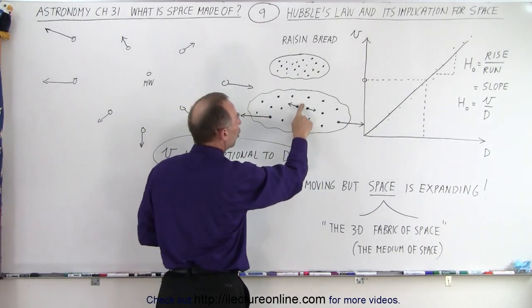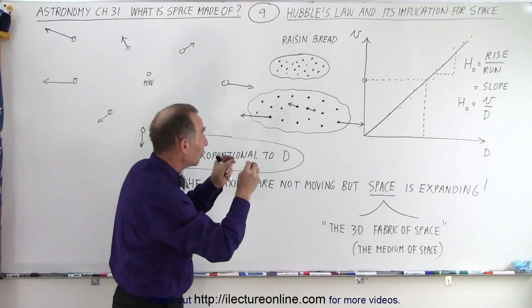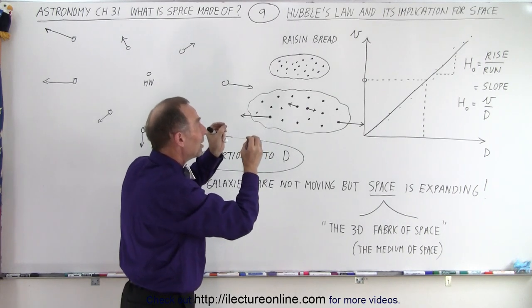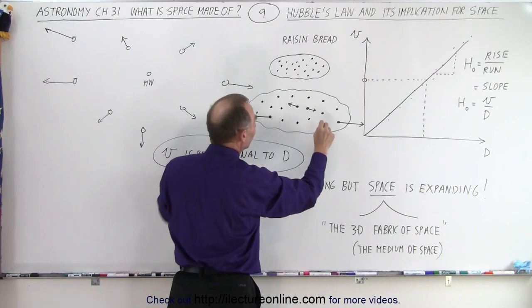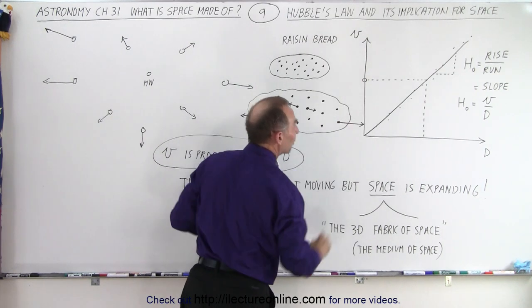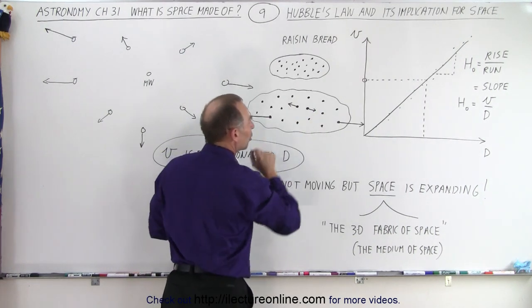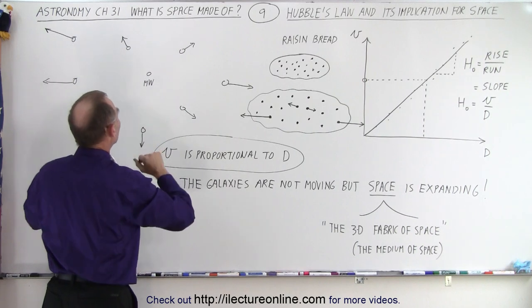The reason is the amount of dough in between, because it's not really the raisins that are moving. The raisins are stuck in the dough. And as the dough is expanding, the raisins are moving away from each other. And the more dough there is in between the raisins, the faster the raisins appear to be moving away from each other. And of course, the less dough, the slower.